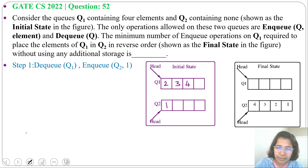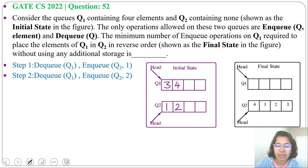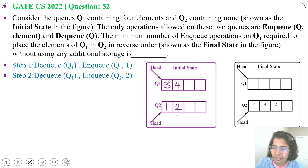Next, again we DQ from Q1 and NQ at Q2, inserting 2 into Q2. Now Q1 contains 3, 4 and Q2 contains 1, 2. But in the final state it must be in reverse order, so we need to reverse Q2.